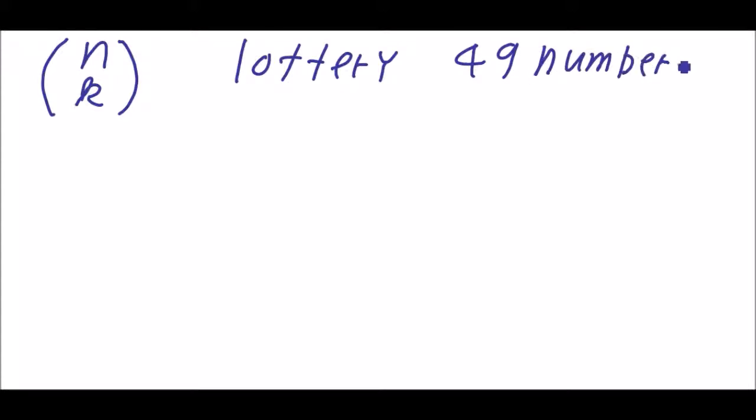Let's say something about this n choose k. It's the number of possibilities to choose k objects out of n objects.